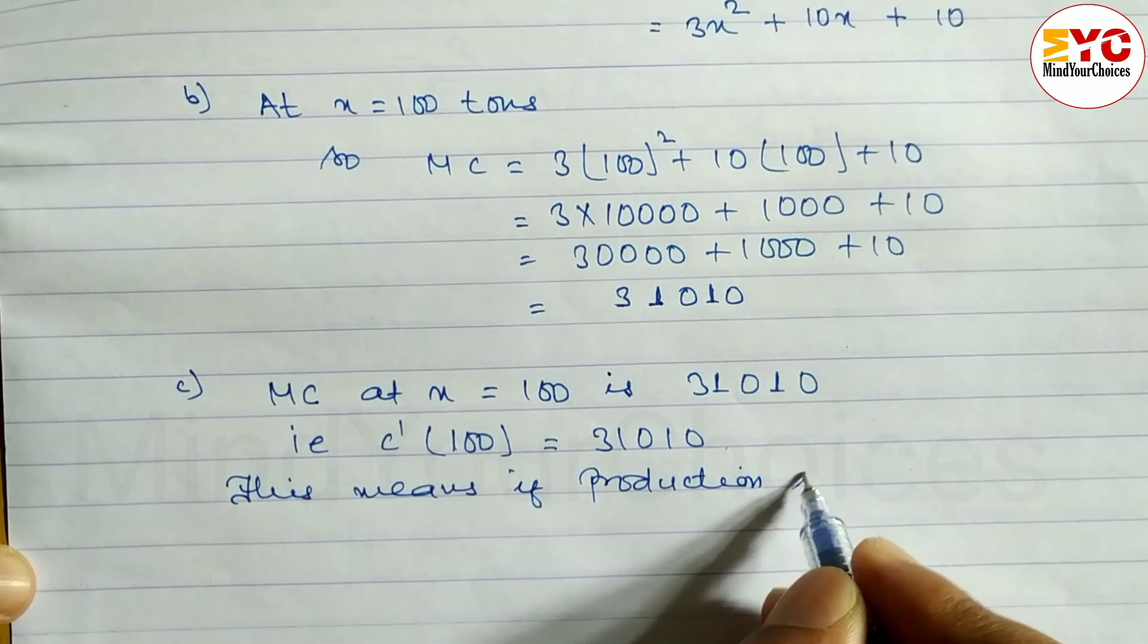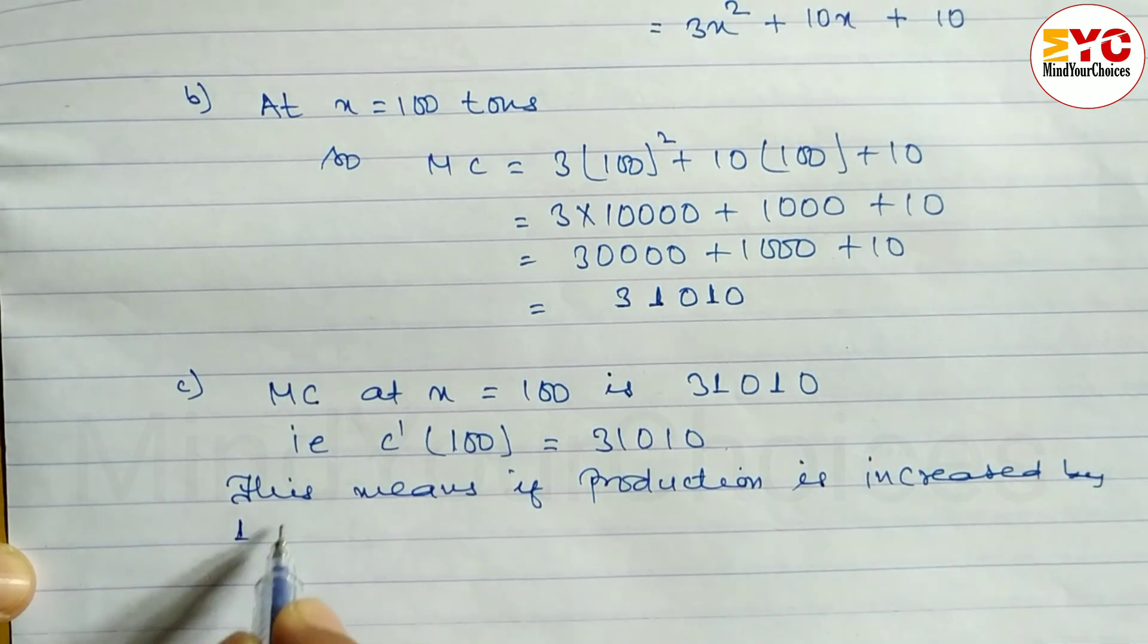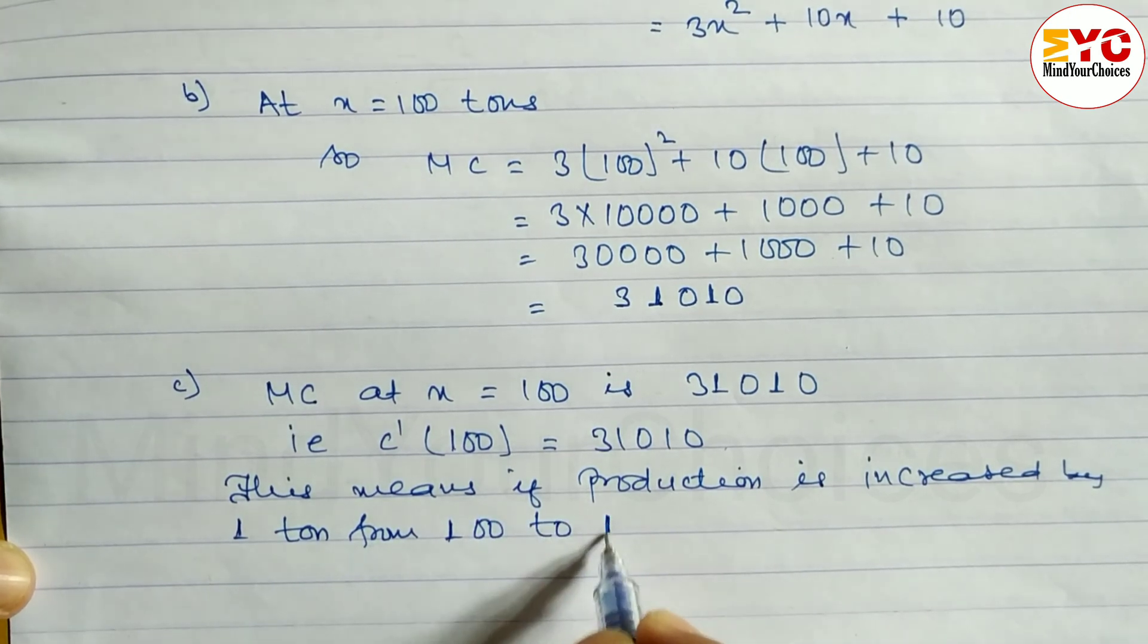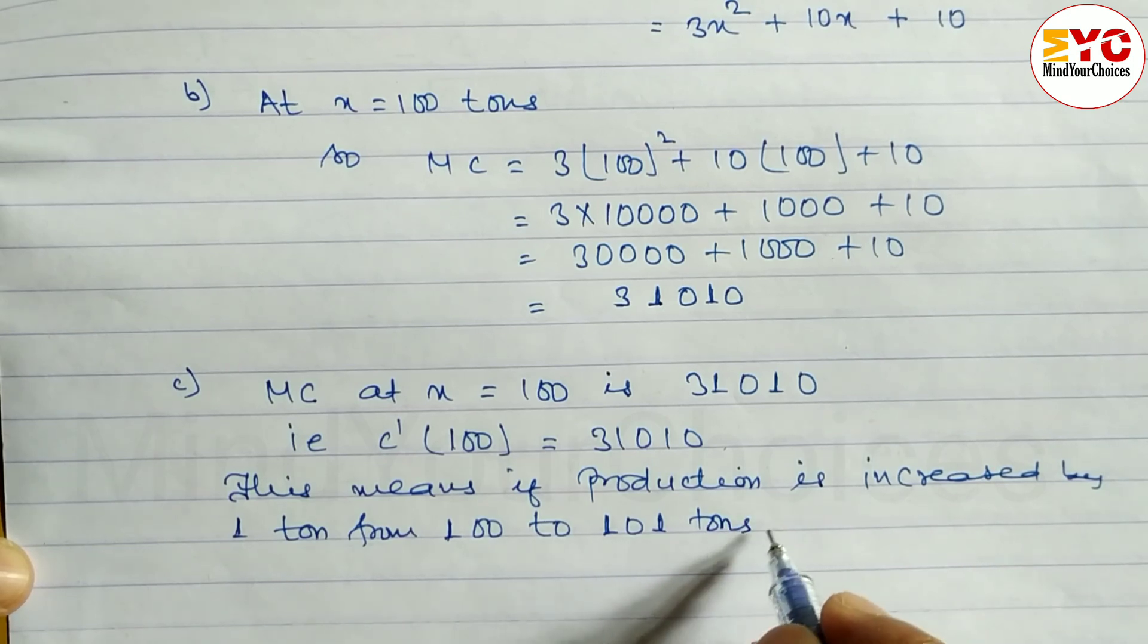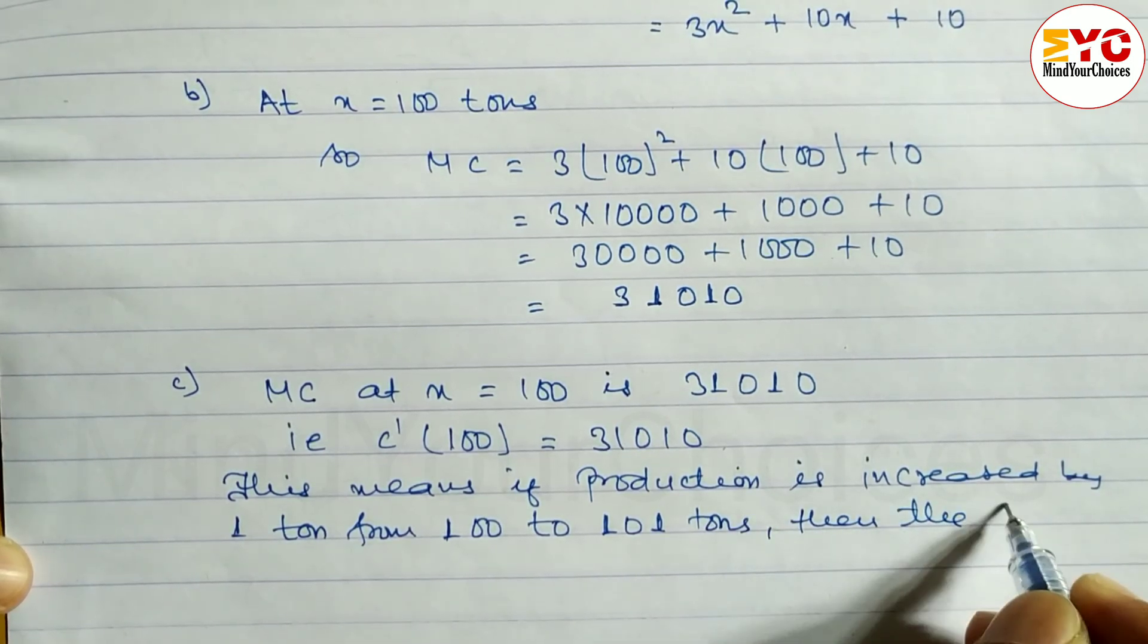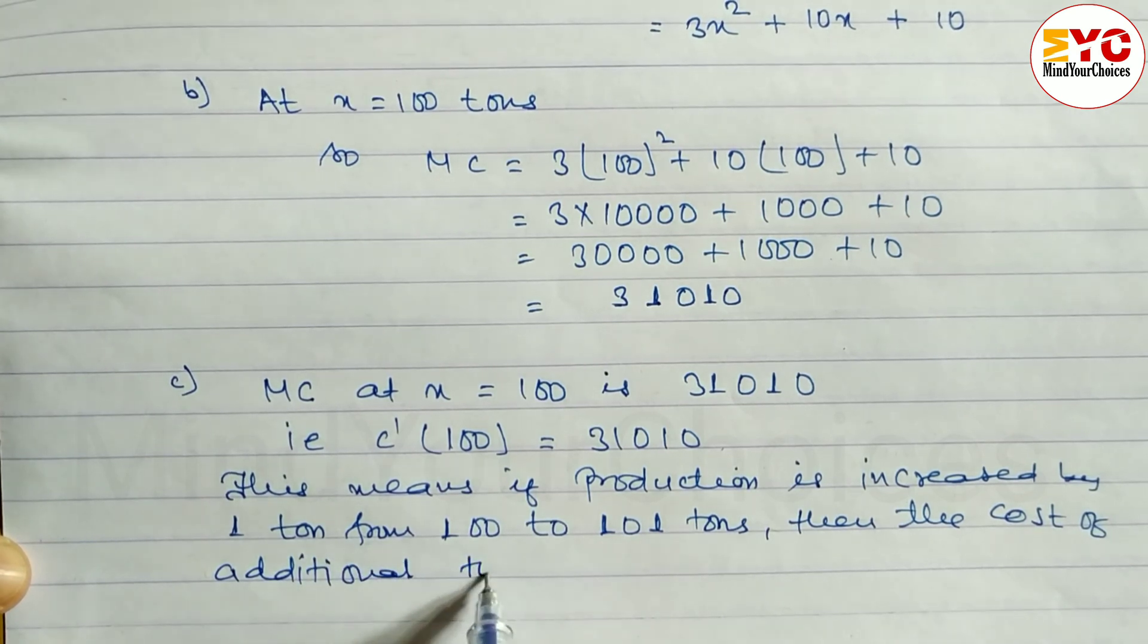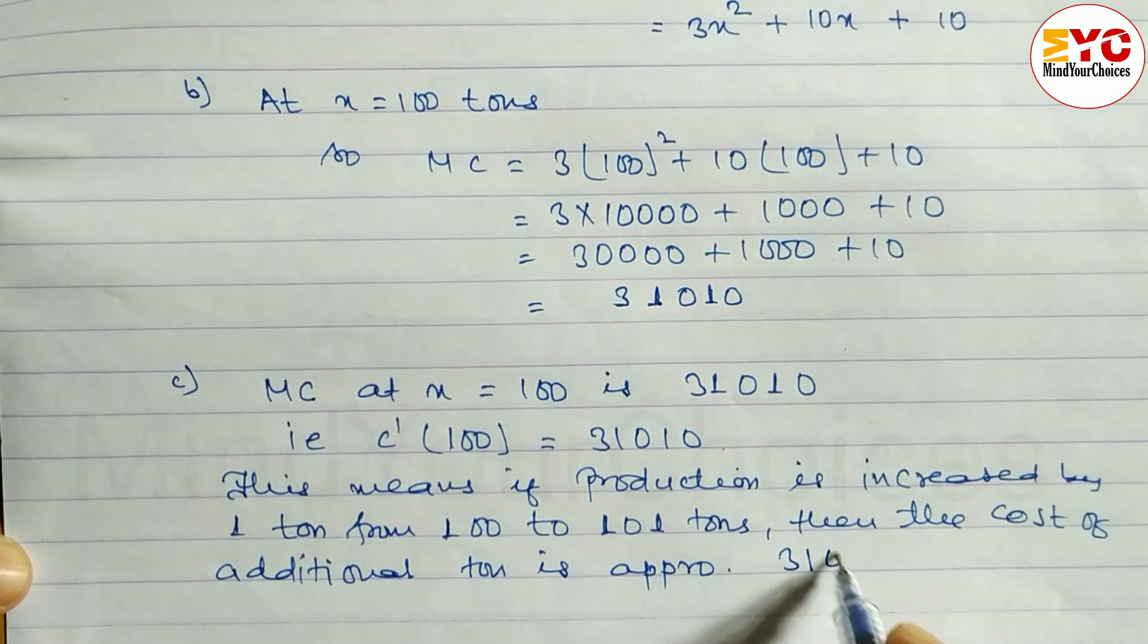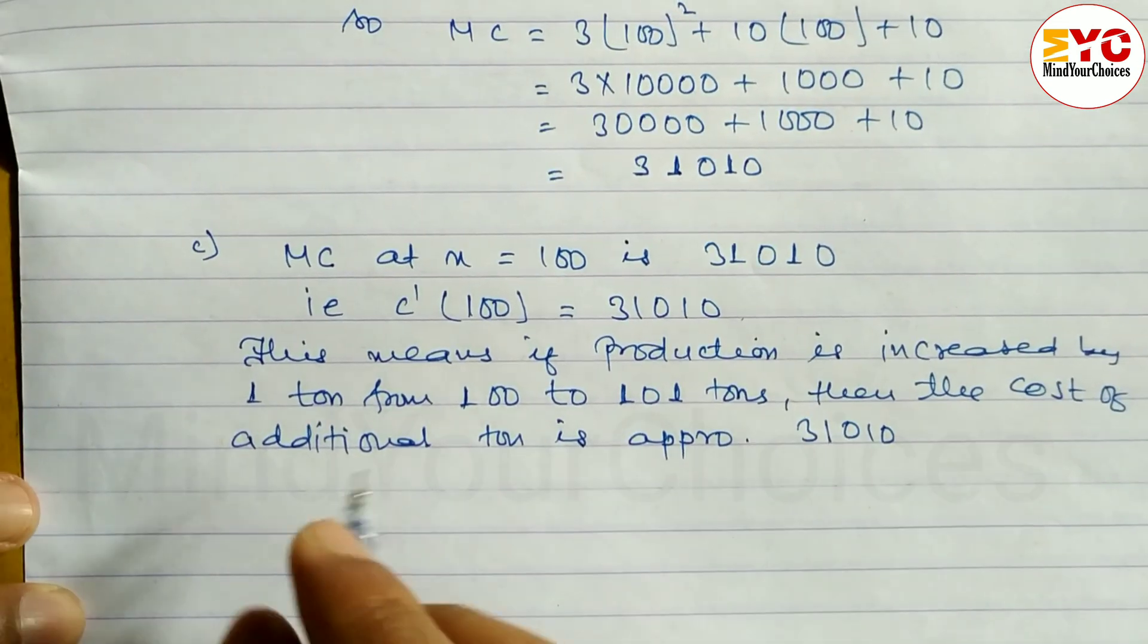This means if production is increased by one ton from 100 to 101 tons, then the cost of the additional ton is approximately 31,010.